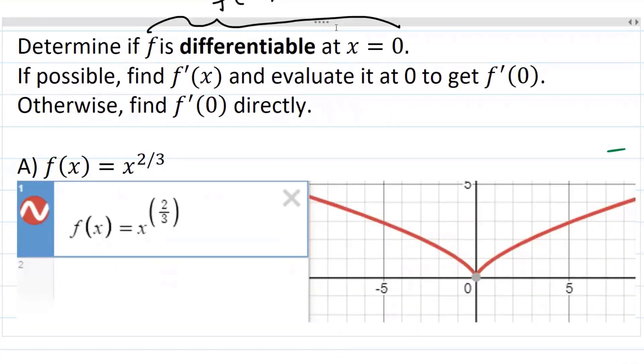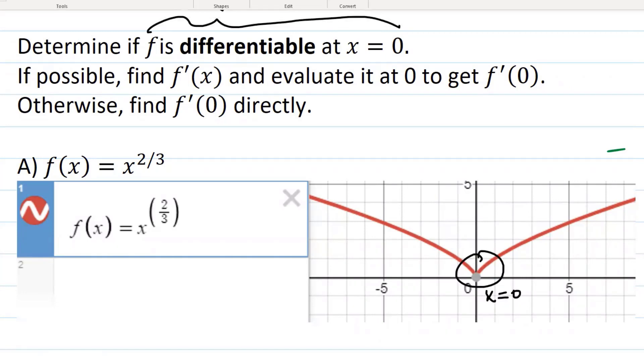Let's look at this function f of x equals x to the two-thirds power. This is an interesting looking function. You see how it comes to a sharp point at zero? Let's see what happens when we actually find the derivative.